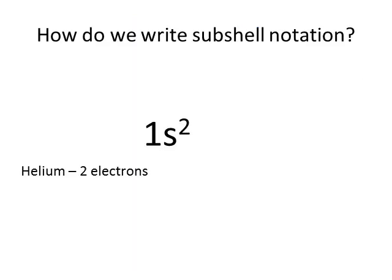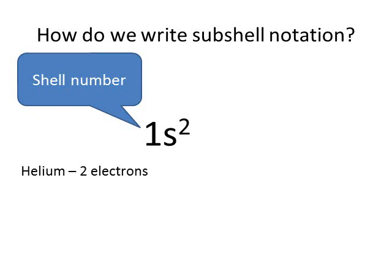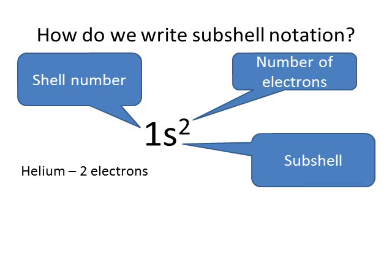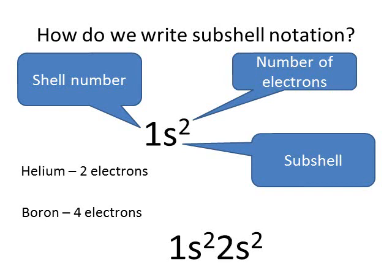So how do we write the electronic configuration of an atom now that we know that there are subshells within the shells? First of all, we write the shell number. So for helium, this is 1. Then we give the subshell, and then we state how many electrons are present in the subshell. So for boron, which has 4 electrons, we will place 2 electrons in the first shell and write it as 1s². Then, since the first shell is full, we have to put the other 2 electrons in the lowest energy subshell of the second shell, which is the 2s subshell, and show that we have 2 electrons there.